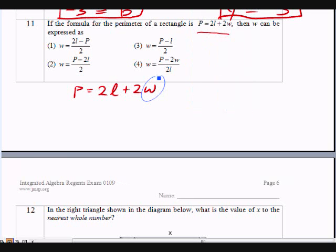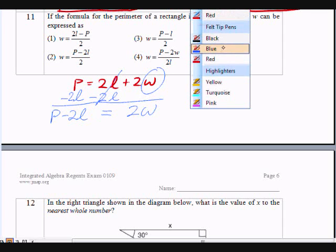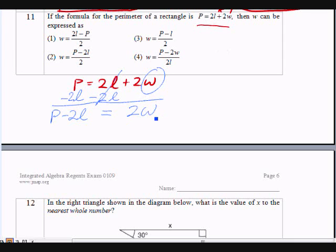So I'm going to start by subtracting 2l from both sides. And this way, 2l cancels on the right side. There's no more 2l's. And we're left with 2w. This side is P minus 2l. And to get rid of this last 2, you're just going to divide by 2. And w is equal to P minus 2l divided by 2. Let's see if they have that as the answer. And that is choice 2 over here. There you go.